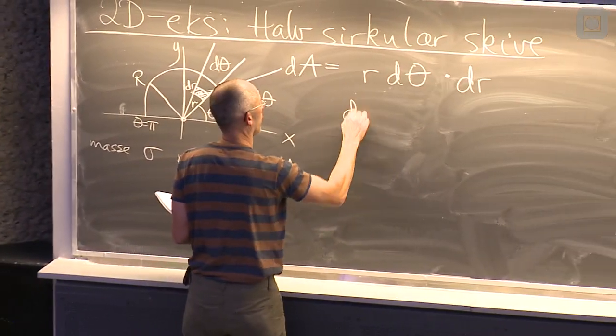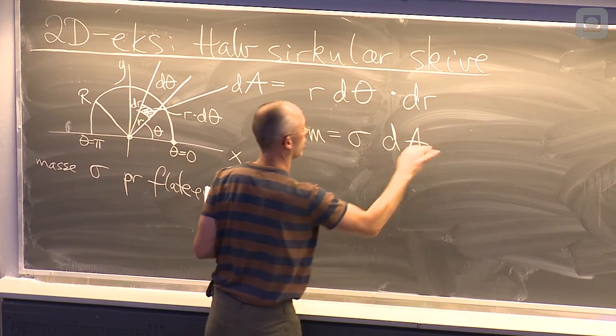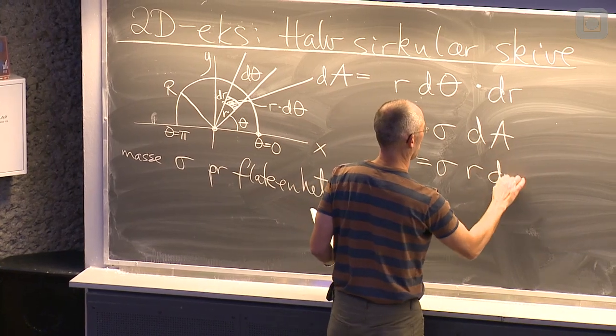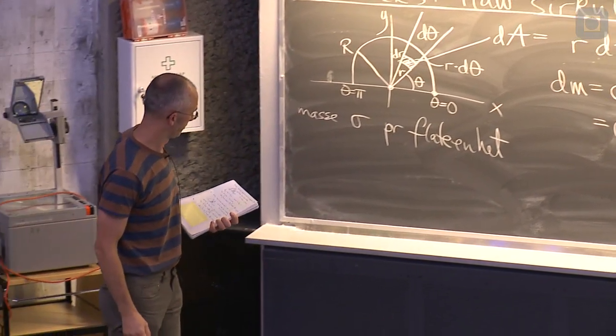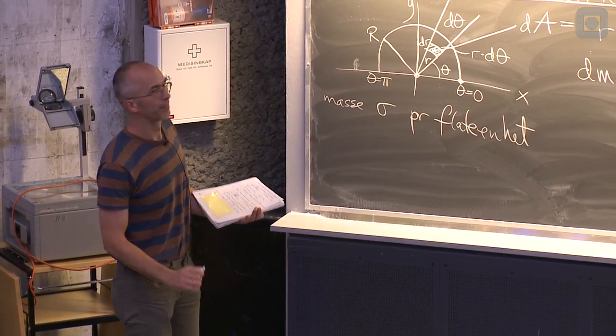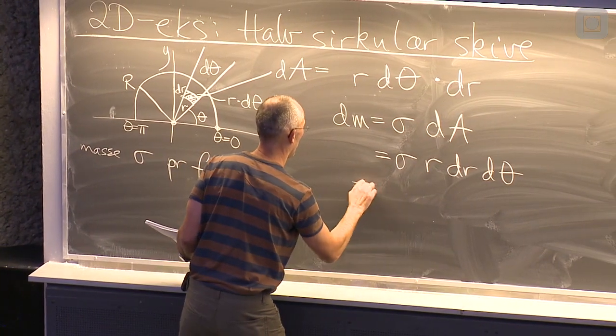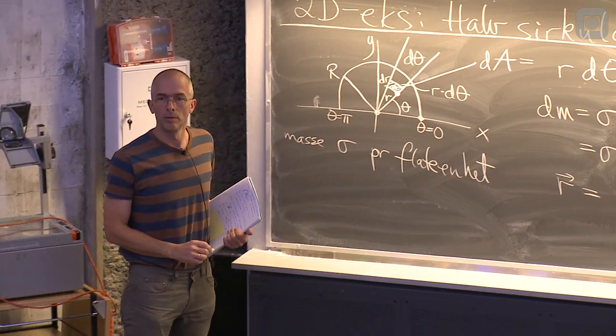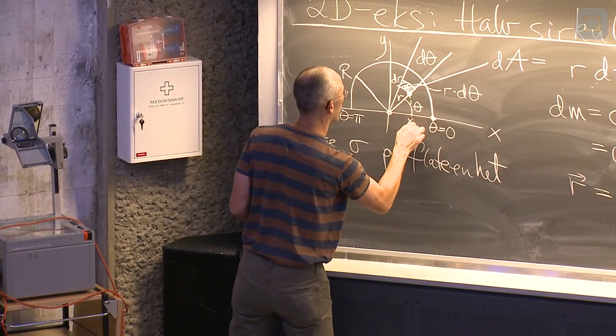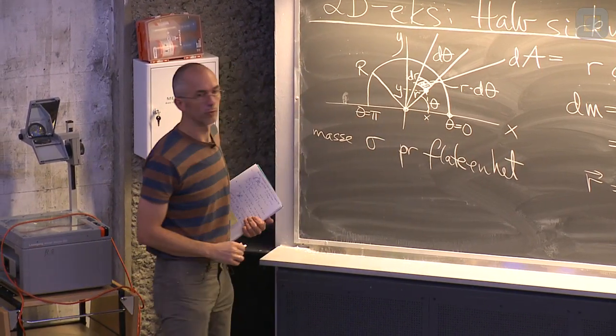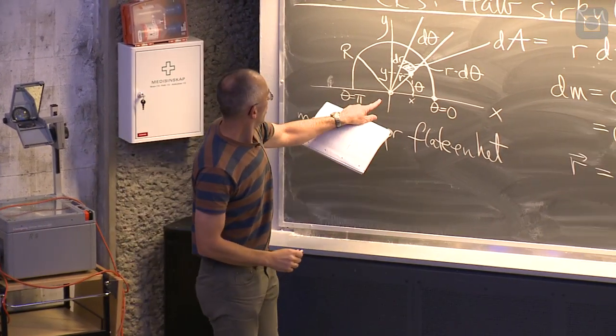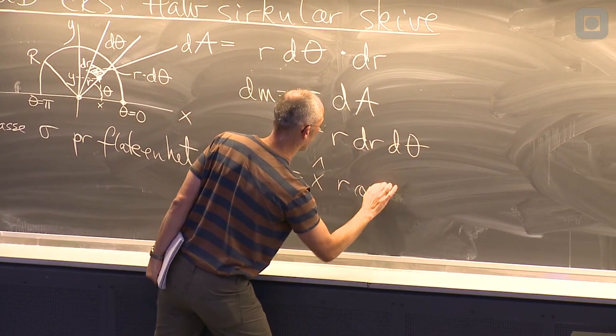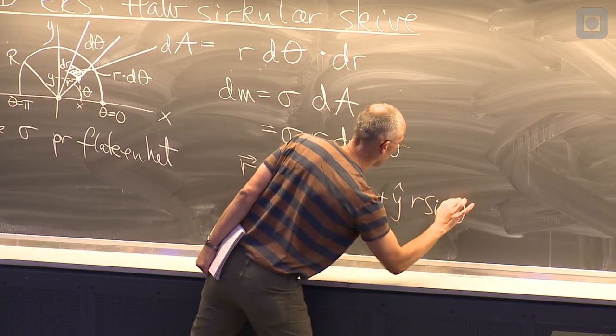Da dekker hele skiva og må dele opp i sånne små biter med et sånn areal. Det betyr at masse elementet mitt, som da er sigma gange, altså massetettheten gange arealet, det blir sigma r dr d theta. Så inngår også posisjonen. Det blir nesten det samme som vi hadde for den ringen, bortsett fra at posisjonen til det lille masseelementet mitt her, det har en x-koordinat der, og en y-koordinat der. Og det er ikke store r gange henholdsvis kosinus og sinus theta, men lille r gange kosinus theta i x-retning, og lille r gange sinus theta i y-retning.